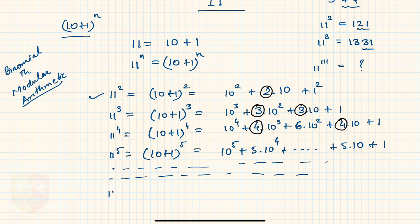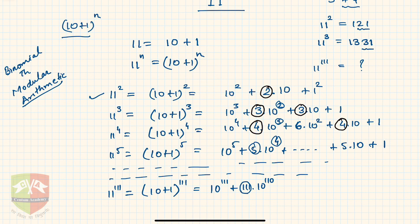So for 11 to the power 111 this will equal 10 plus 1 to the power 111. So hence it is equal to 10 to the power 111 plus 111 times 10 to the power 110. One less than, if you see, if it is 4 this one is 3, if it is 3 this one is 2, if it is 5 this one is 4. So if it is 111 here it will be 10 to the power 110, though it is not important for this problem but for understanding purposes.